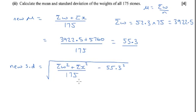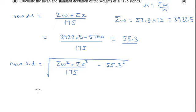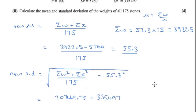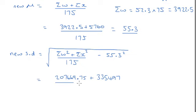We're going to do the 207669.75 sum of the w squareds plus the value that they've given us, the 335497. That's all going to get divided by 175, and then we're going to subtract that new mean squared and we're going to square root it.